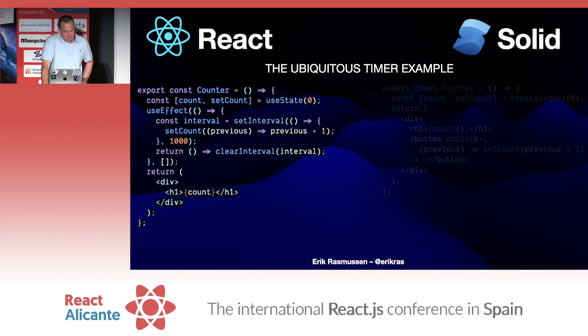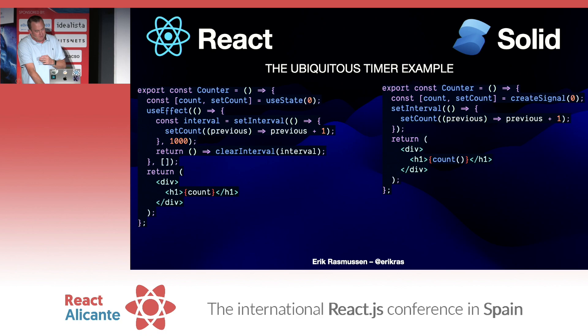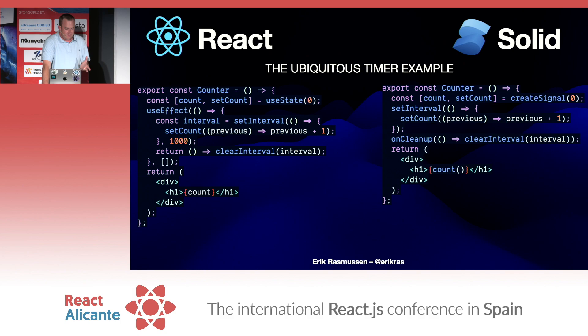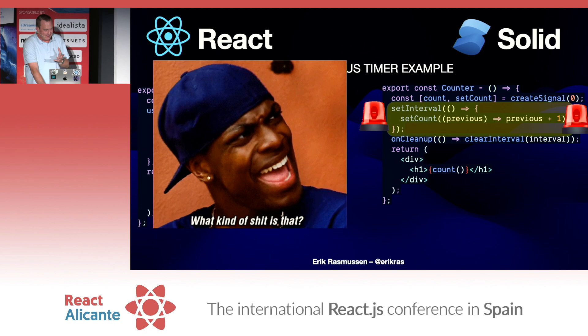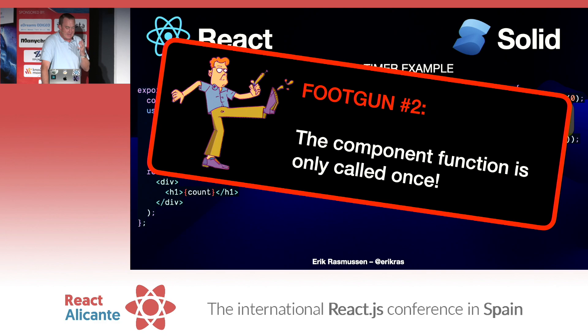How about Solid? We'll kill the button, and — hold on to your seats — this is actual Solid. We set the interval, and then to clear the interval we call onCleanup. Now, if you're like me the first time I saw this syntax, you're very concerned about what's going on here. How are you setting an interval in your component function? And this is the most mind-blowing thing about Solid for React developers — foot gun number two: the component function is only called once.